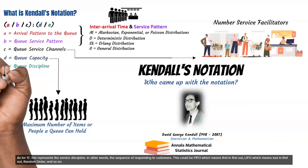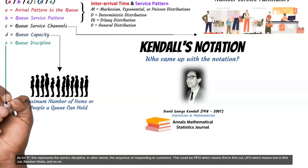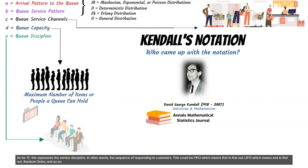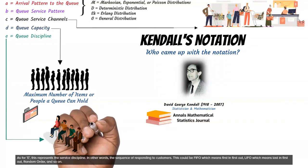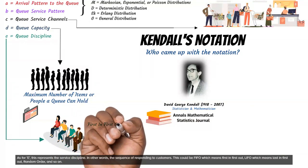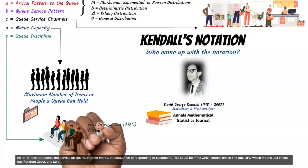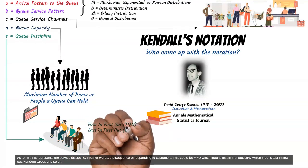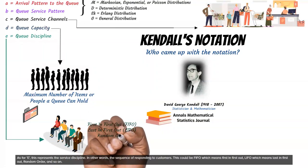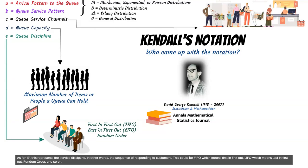As for E, this represents the service discipline — in other words, the sequence of responding to customers. This could be FIFO, which means first in first out, LIFO, which means last in first out, random order, and so on.